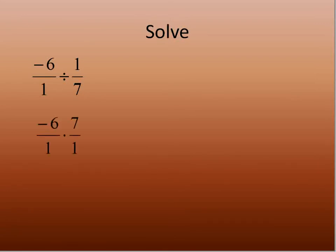We multiply by the reciprocal. We flip the second fraction and change it to multiplication. So now it's negative 6 over 1 times 7 over 1. Something divided by 1 is just that number, so that's the same as negative 6 times 7, which equals negative 42.